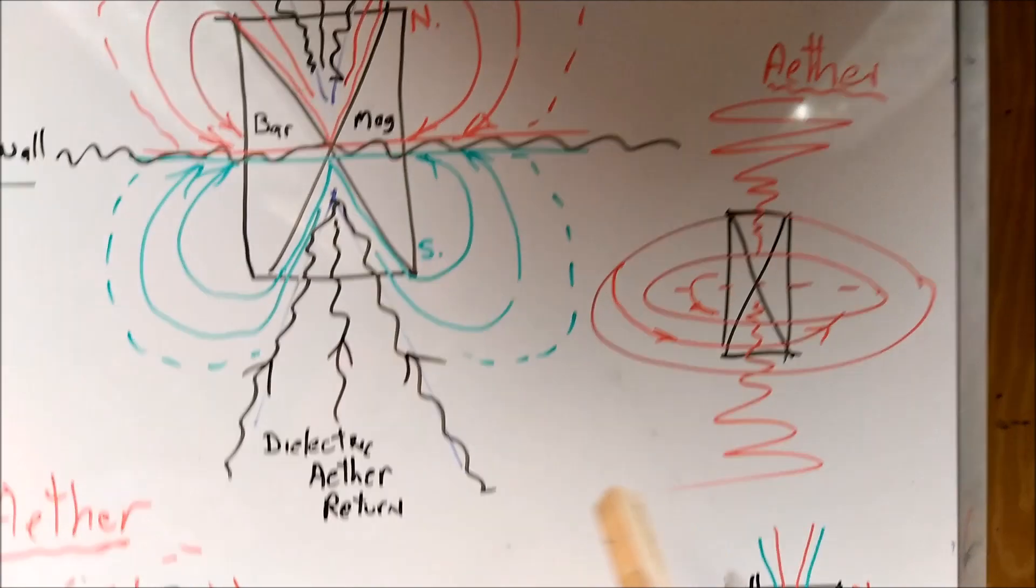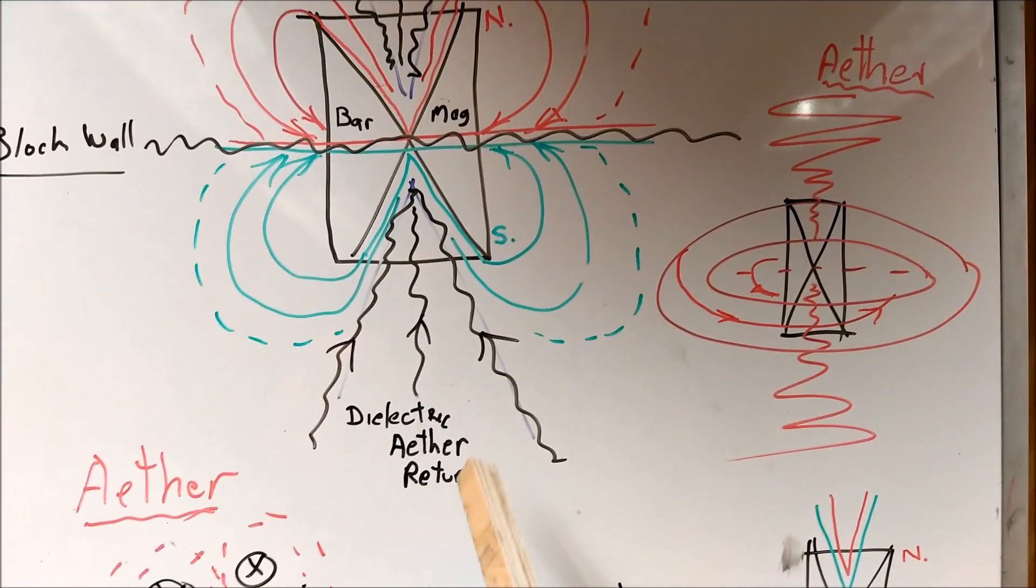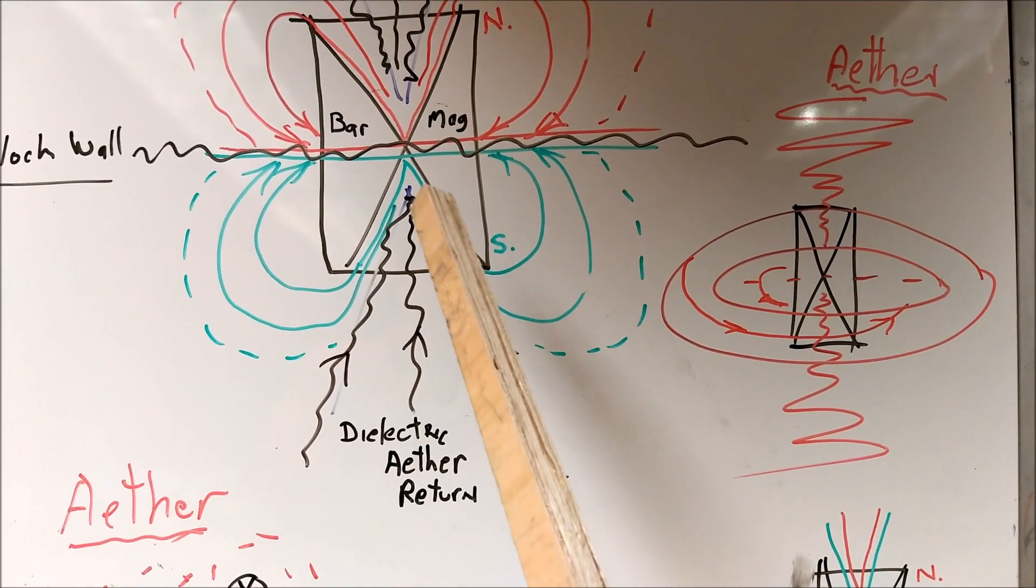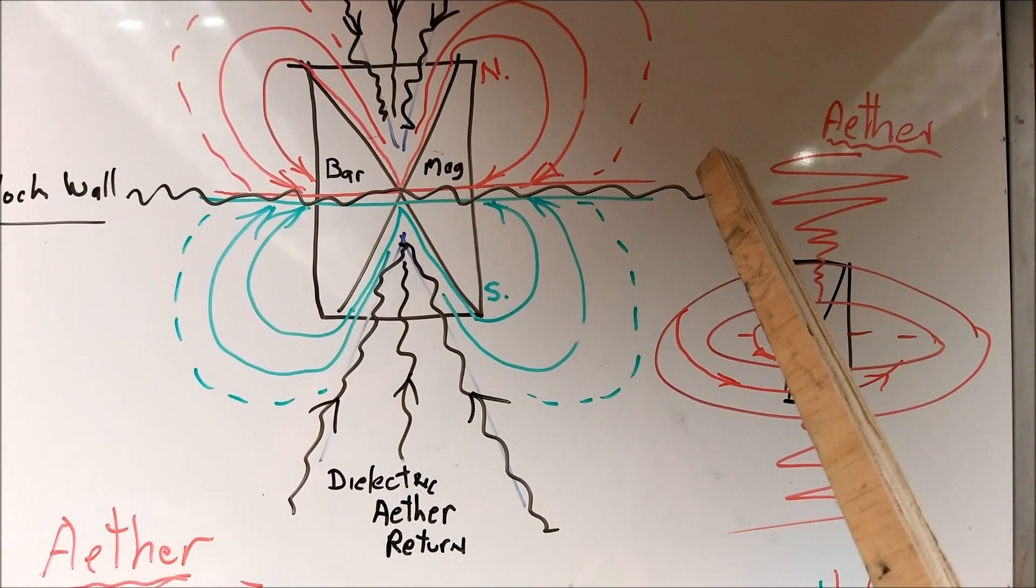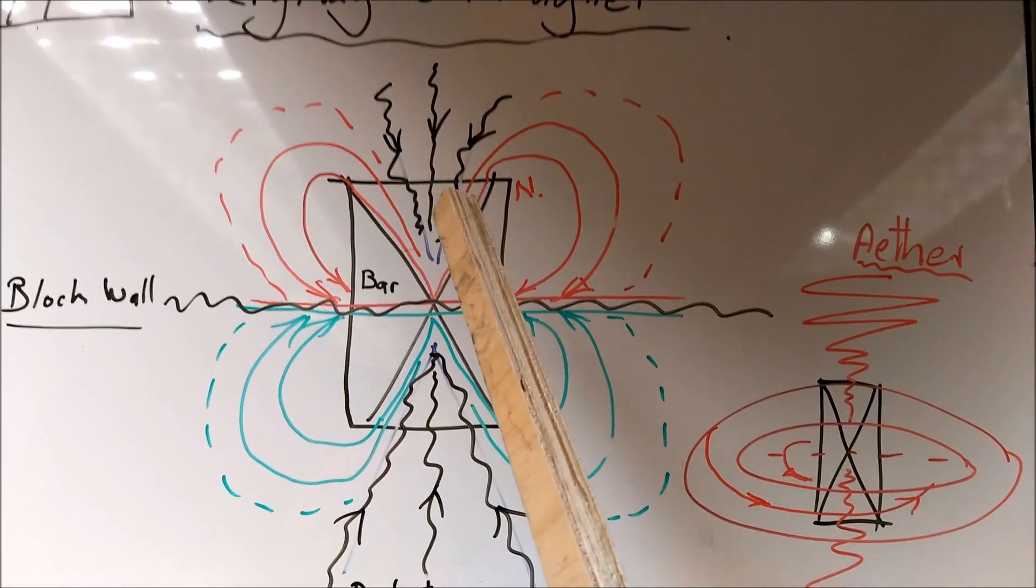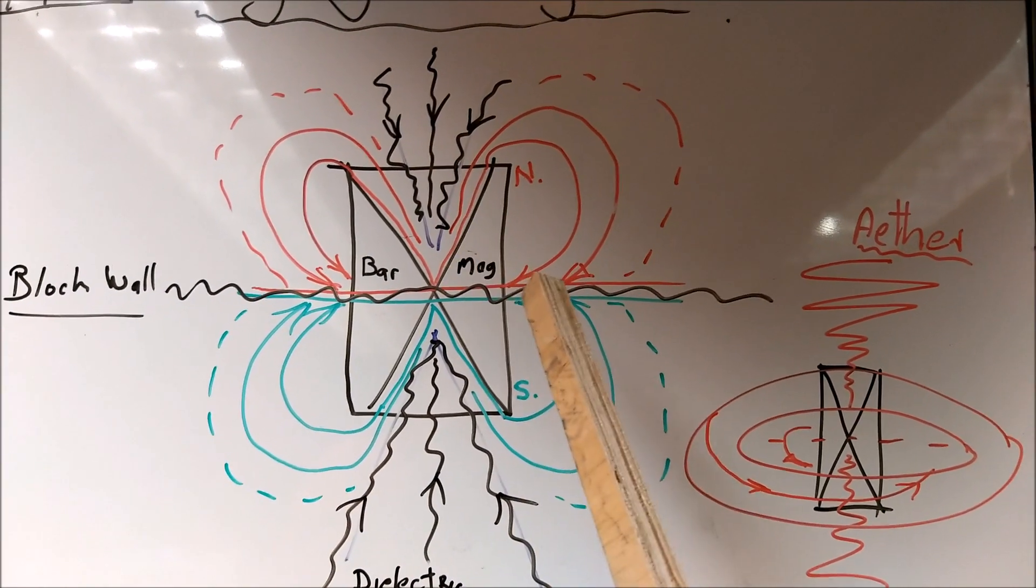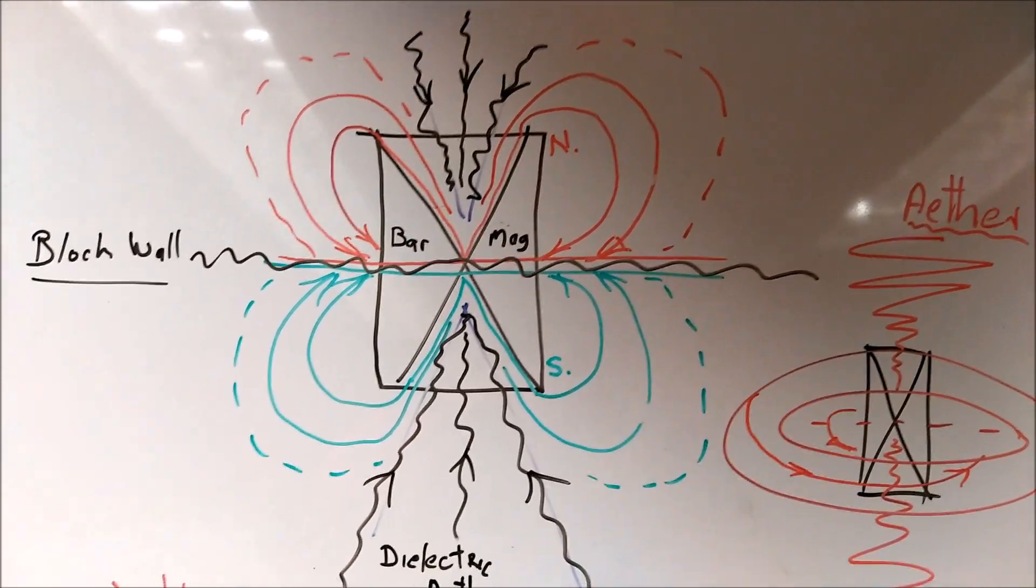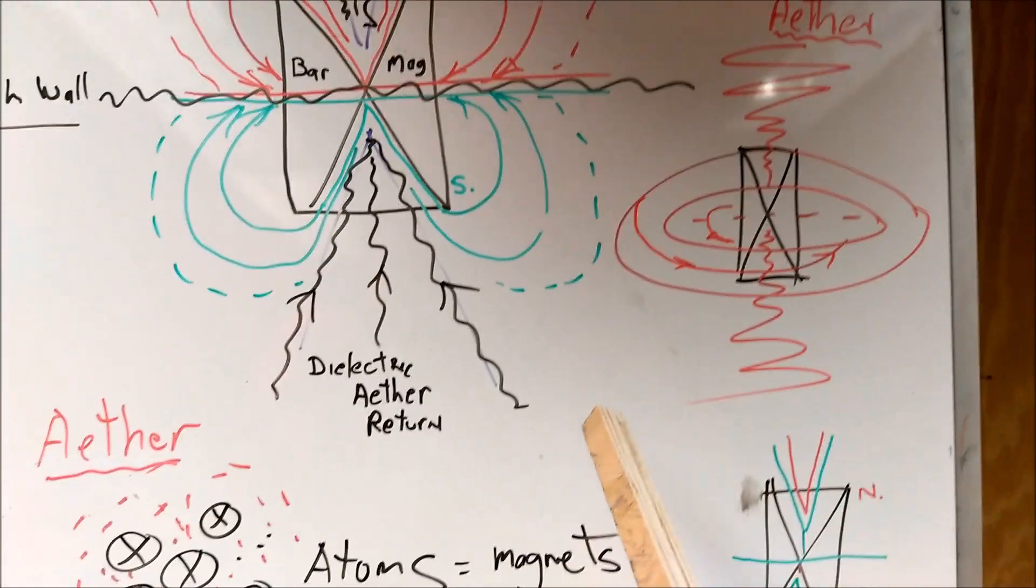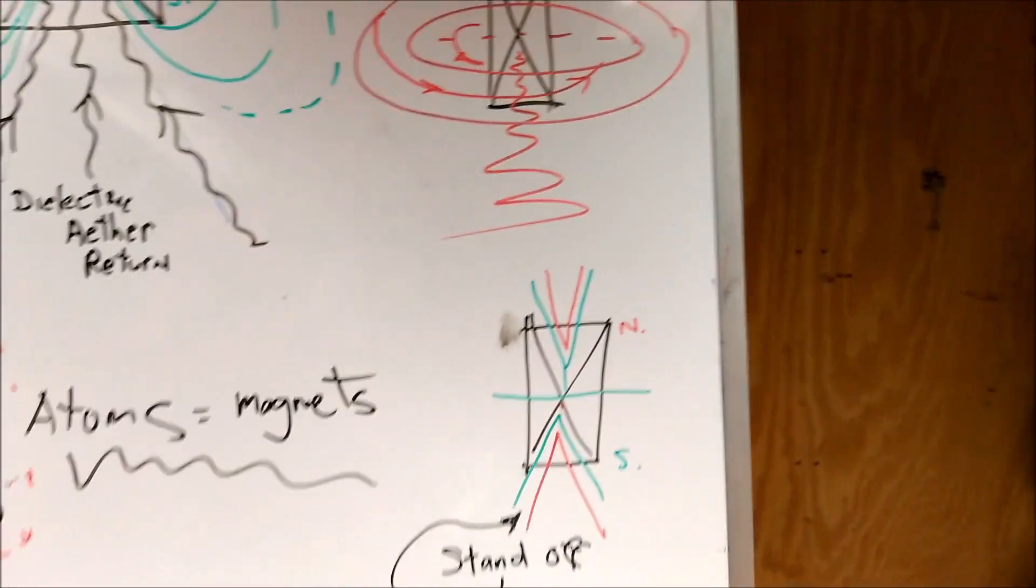If we look at the bar magnet again in detail, we've got the dielectric ether return coming in and then flowing out. We've got the same at the North Pole—the dielectric flowing in and then flowing out, or the other way around. So this is my take so far.